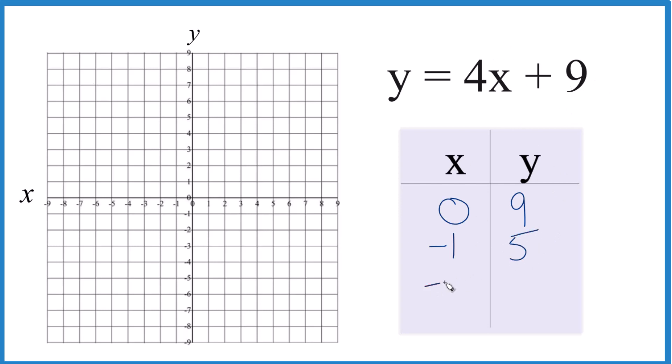How about negative 2? 4 times negative 2, that's negative 8, plus 9, that gives us 1. And these are values I just made up because I think that they would fit on the graph. They're kind of convenient. You can choose any values and they'll be on the line for y equals 4x plus 9.